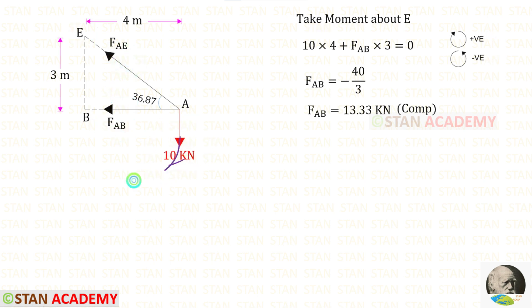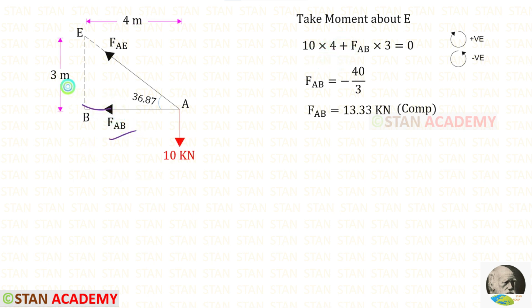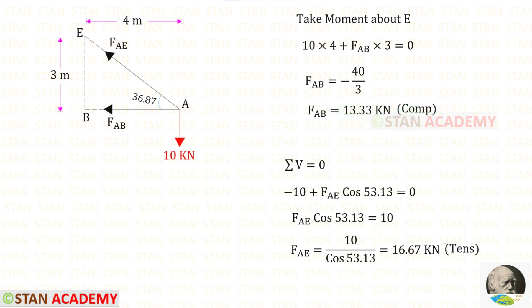10 is acting in the clockwise direction so it will be positive and the distance is 4. FAB is acting in the clockwise direction so it is also positive and the distance is 3. For FAB, we will get a negative value, that means it is compressive. Now let us apply sigma V equals 0.